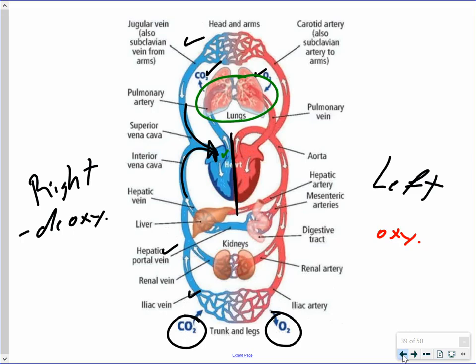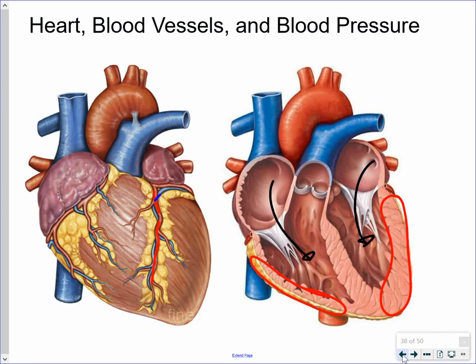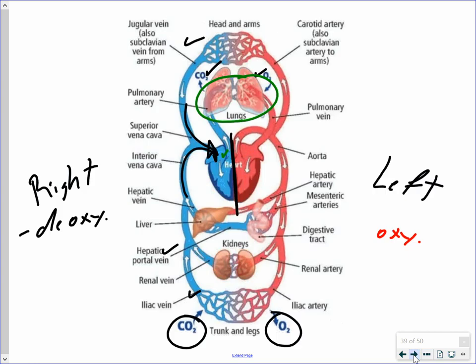The atria can pump as well — they are muscular — but their pumping is not critical for moving blood into the ventricles. They are fairly thin-walled compared to the ventricles, as we can see in the picture.